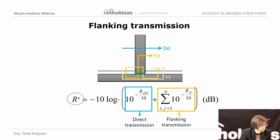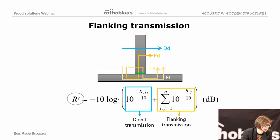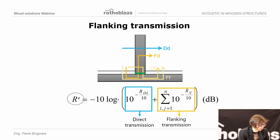In timber buildings it is very important to consider the flanking transmission because it affects the final performance. If we install a wall into a building, we will not have the performance that we measured in the laboratory — we will have a worse performance. This is due to the fact that we don't have just the direct transmission measured in the laboratory, but also the flanking transmission, because vibration propagates not just through the wall dividing the two rooms but also through all other parts of the structure. All these paths through which vibration propagates are called the flanking transmission.